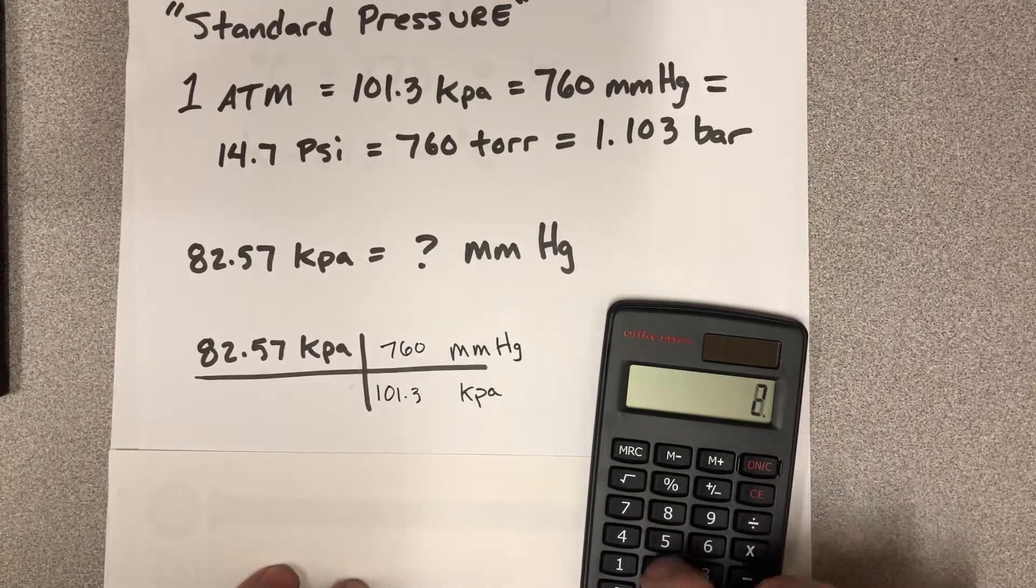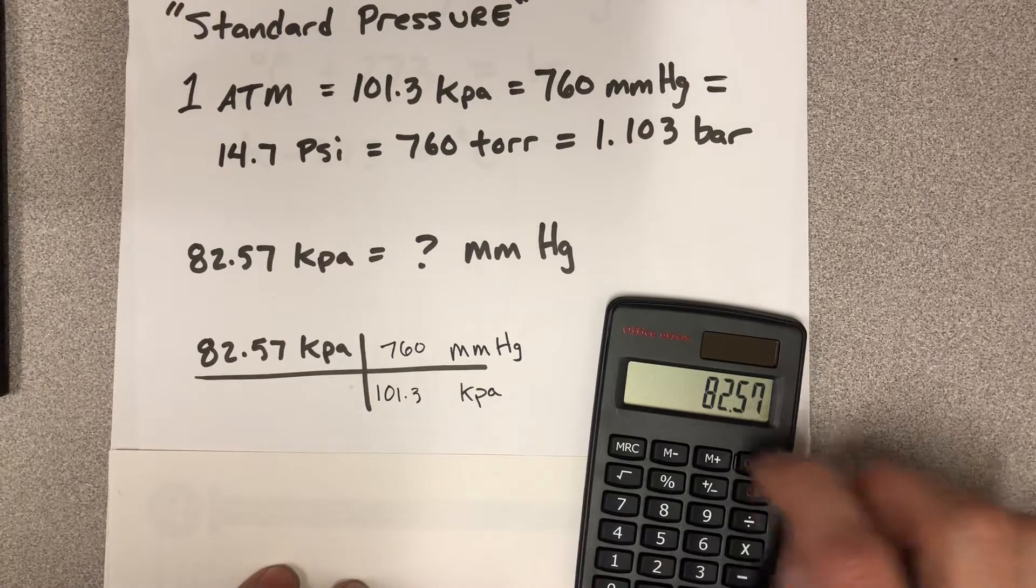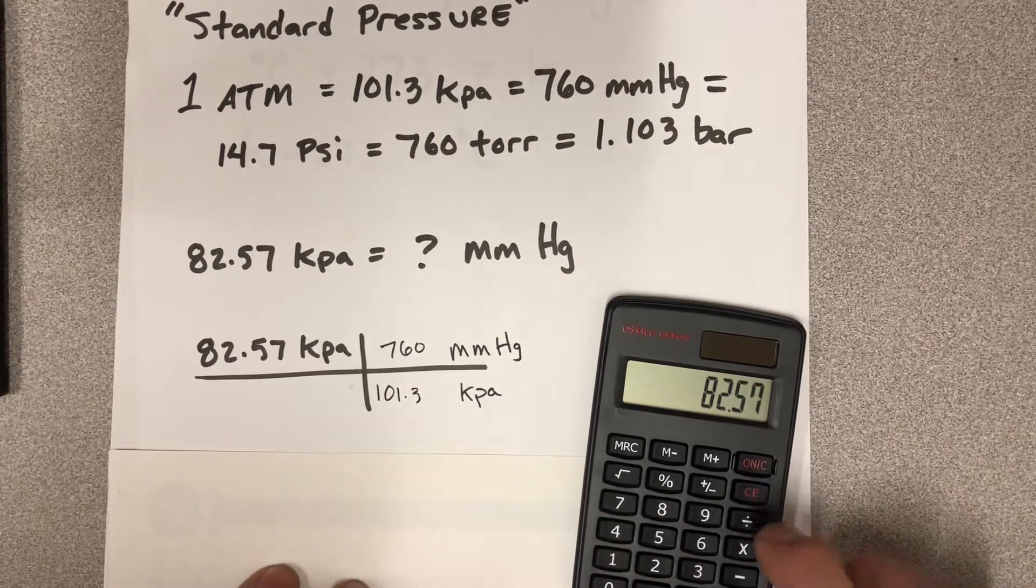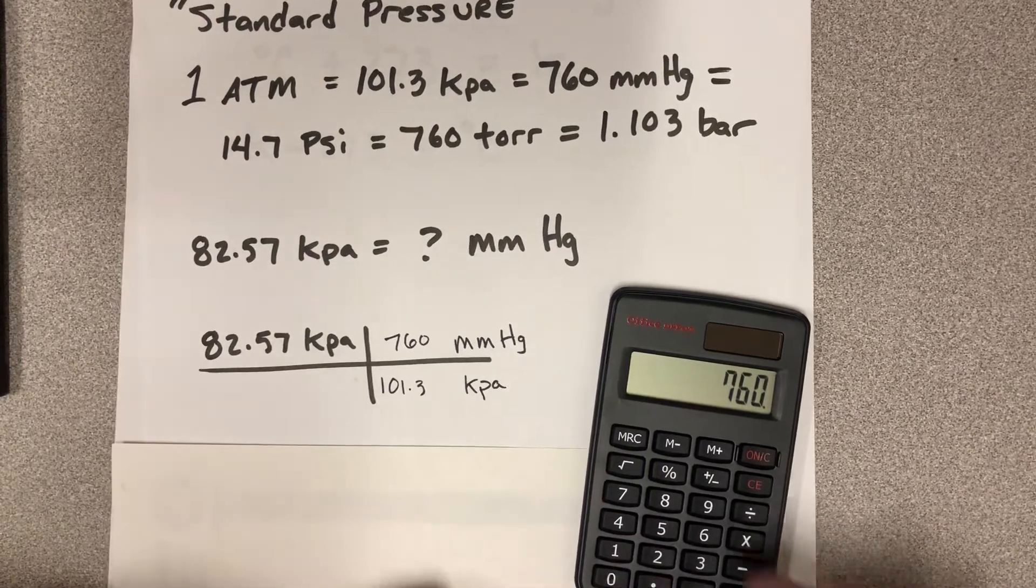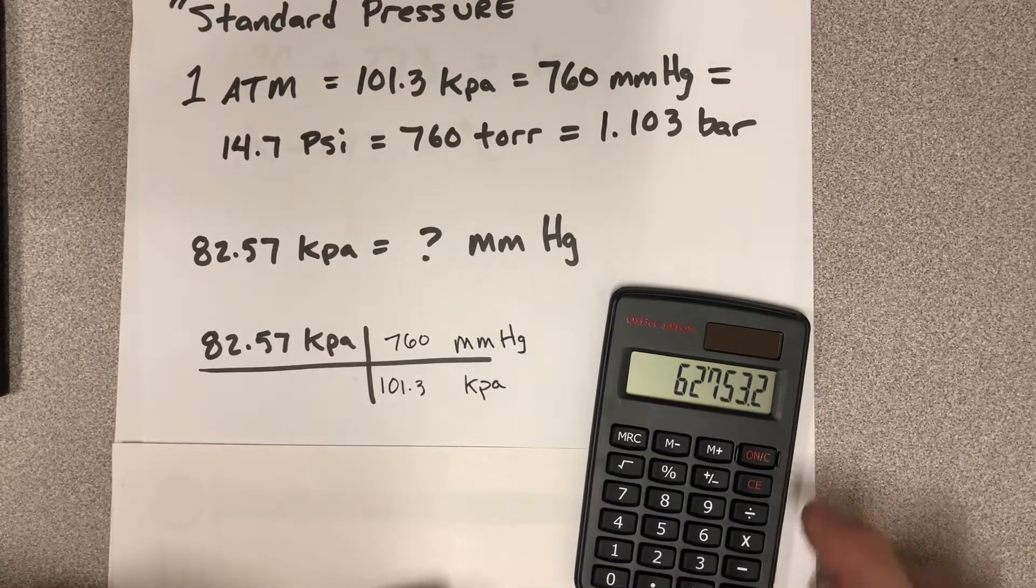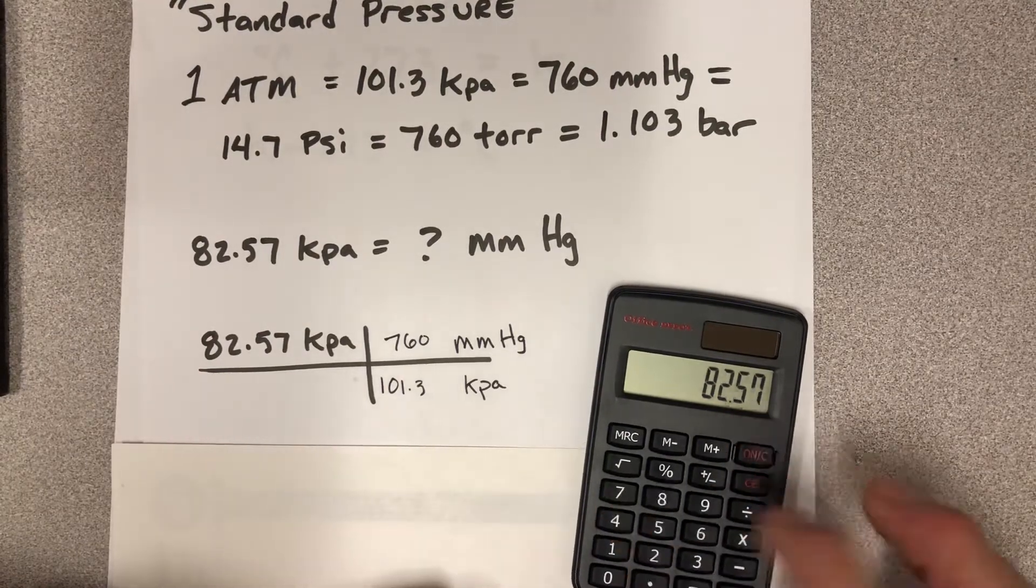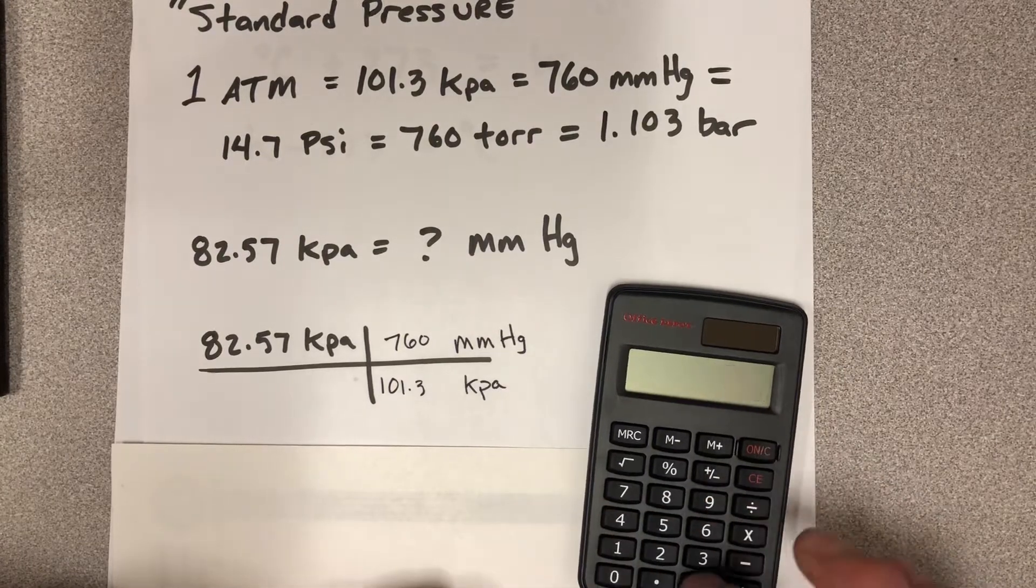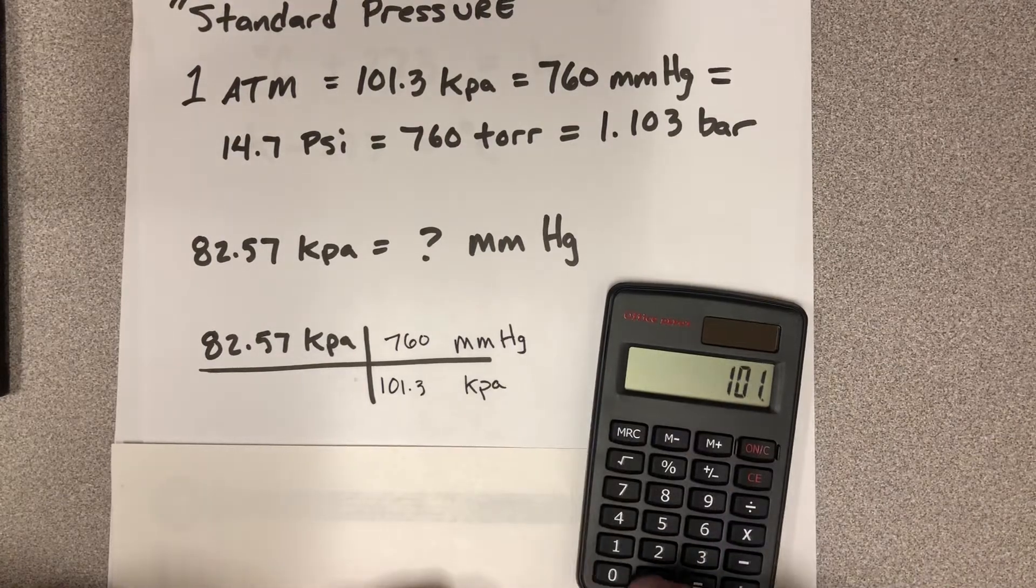So 82.57 times 760, and then everything's all screwed up here. 82.57 times 760 equals, and then divide that number by 101.3.